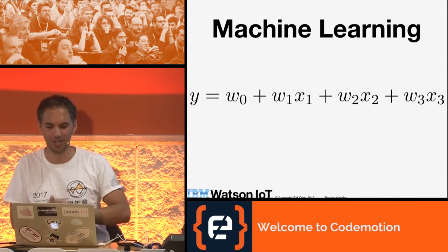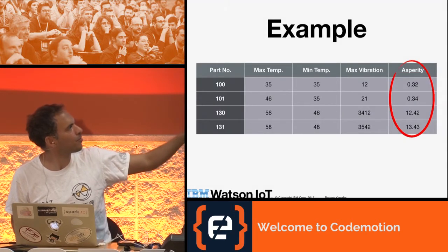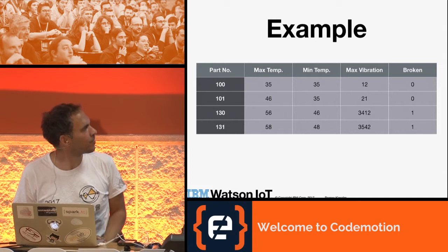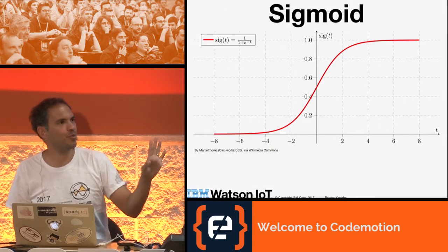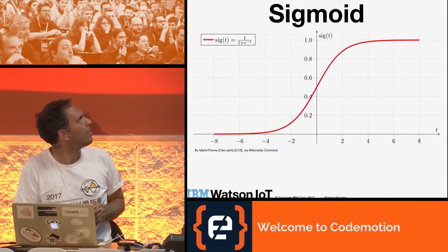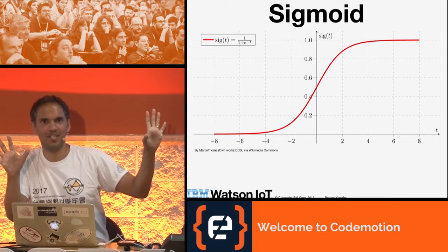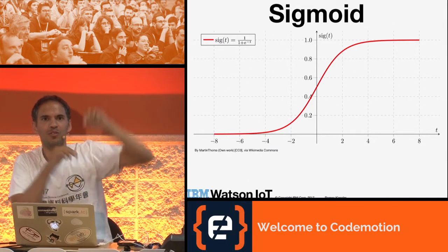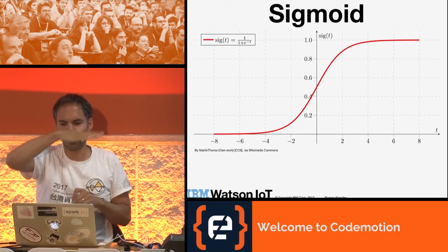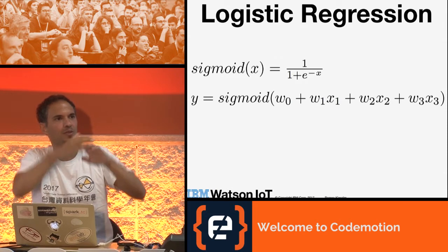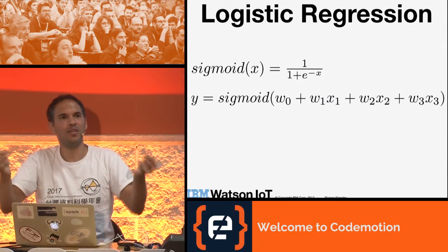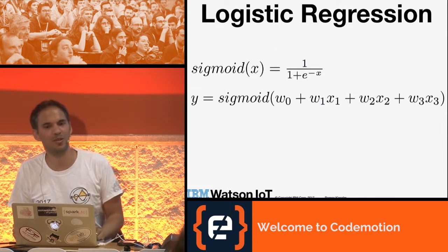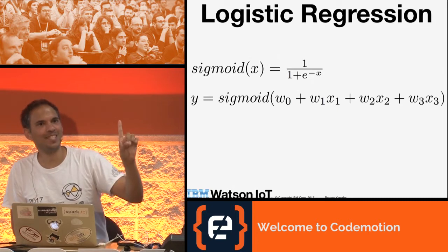How do we turn from a linear regression model to a classification model? We have binary classification data. There's a function called sigmoid — don't be scared. It's 1 over 1 plus e to the power of minus t, but what it actually does is take a value range from minus infinity to plus infinity and squash it to a range between 0 and 1. You select a threshold in the middle: if it's below 0.5 you predict 0, if it's higher than 0.5 you predict 1. You've turned a linear regression model into a binary classifier — this is called logistic regression. You've learned two machine learning models already in the first four minutes.